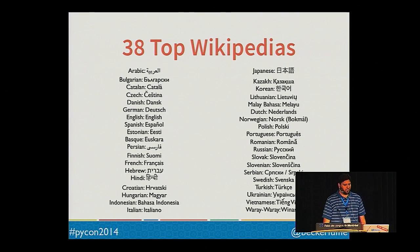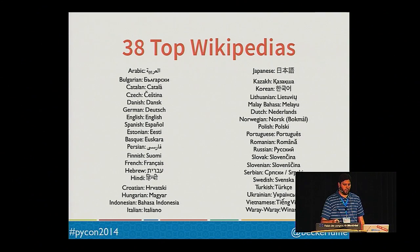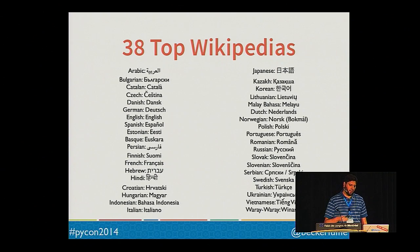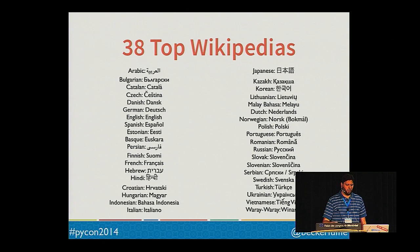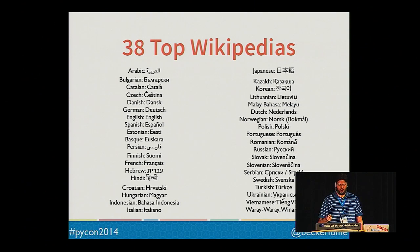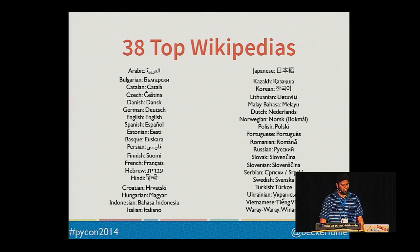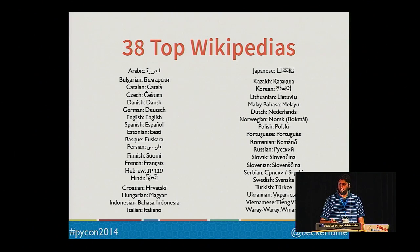I'm going to demonstrate one of the first models I ever created — a model that predicts the language of input text. At the time, I needed a way to identify the language of content created by our customers. To create this model, I used 38 of the top Wikipedias based on number of articles and dumped several of the most popular articles from each.